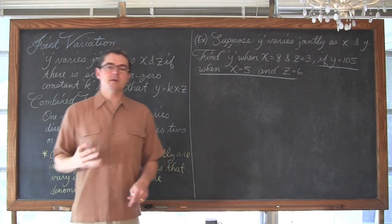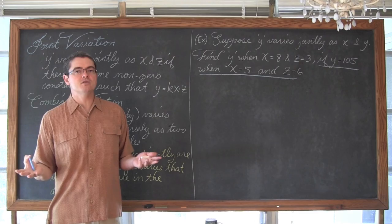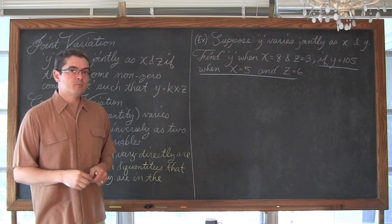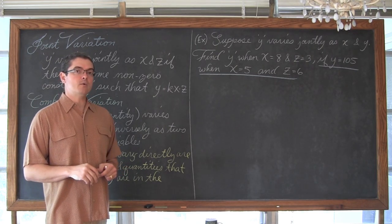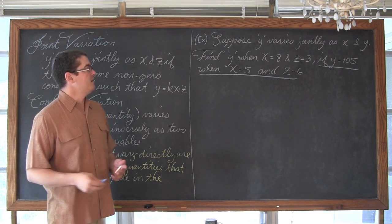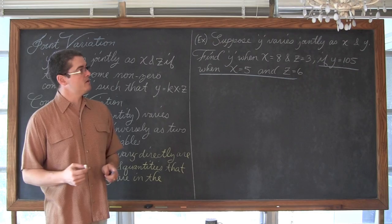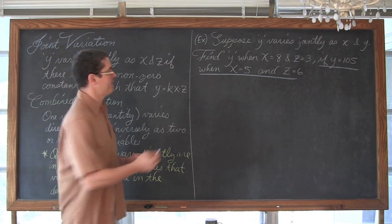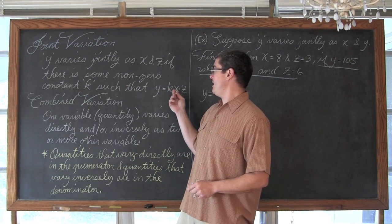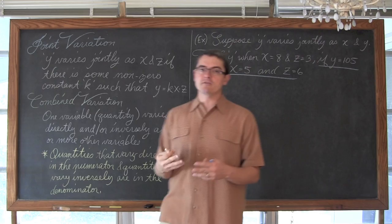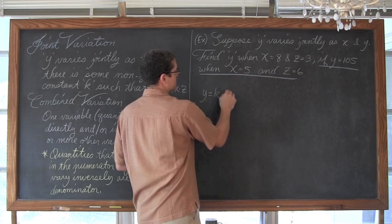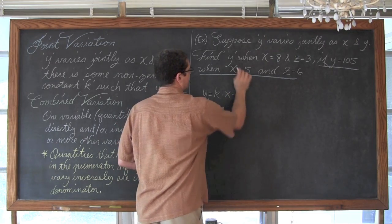Even though our problems are getting a little bit more complex, they still have to give you enough information to find the constant of change — it is basically never given to you. So we are going to use that last little bit where they give us y, x, and z to find out what k is. The problem says y varies jointly, so the structure is y equals k times x times z — basically direct variation but just with more than one other variable.